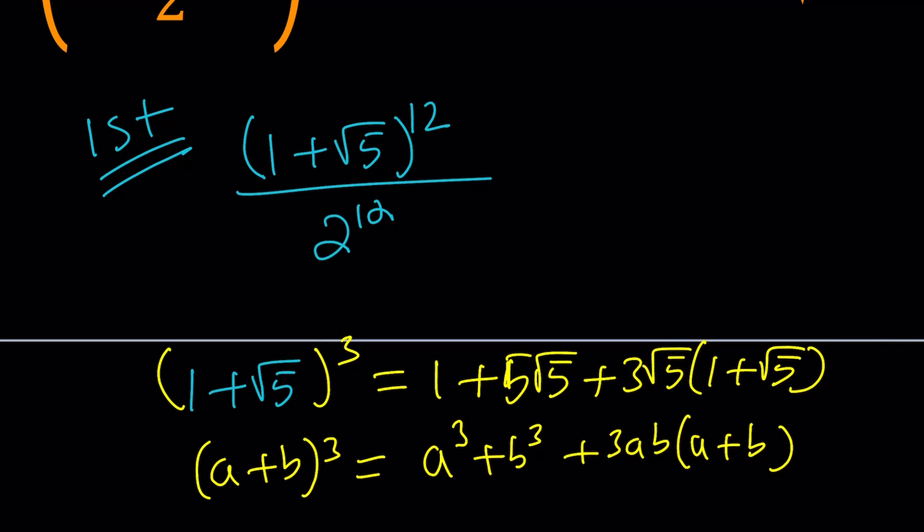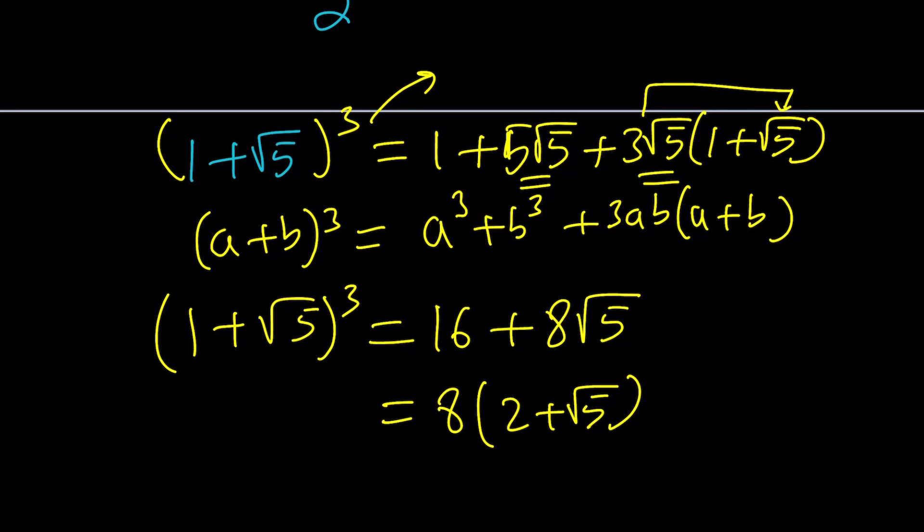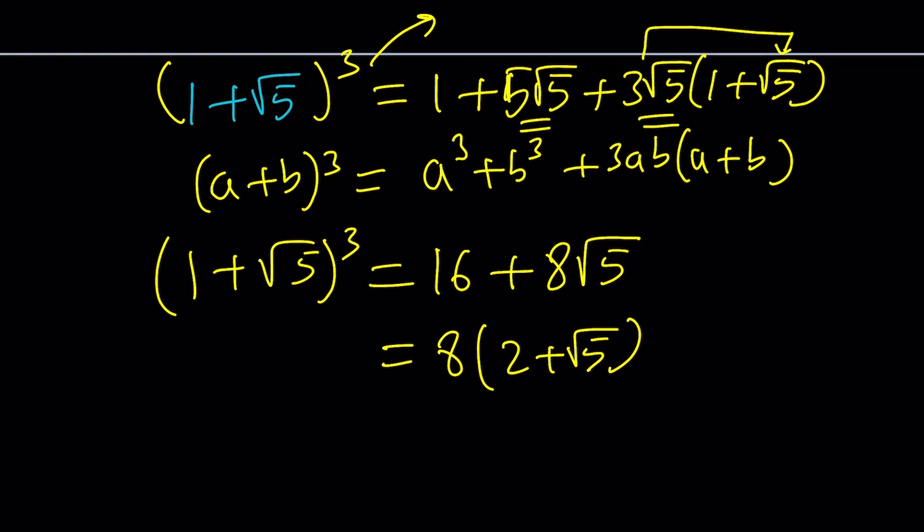So now if you simplify this, you're going to get 1 plus 15, which is 16. So that's going to be 16 plus 5 root 5 plus 3 root 5 is going to give me 8 root 5. Great. So something interesting happens here. When you cube 1 plus root 5, you basically get 2 to the third power or just 8. I could probably just write 8 times 2 plus root 5, which is nice because remember, we have 2 to the 12th power at the bottom. So we would like to have a power of 2 in the numerator.